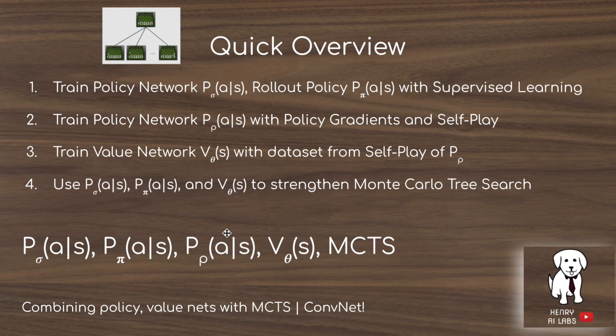The idea is to approximate the Monte Carlo tree search by using policy and value networks — deep convolutional neural networks mapping from the high-dimensional state representation of the Go board, as well as some handcrafted features, into low-dimensional representations. They output actions in the policy networks and estimate the winning probability from a given state in the value network. There are three policy networks: two trained with supervised learning on expert moves, and one trained with self-play and policy gradients, used to train the value network.